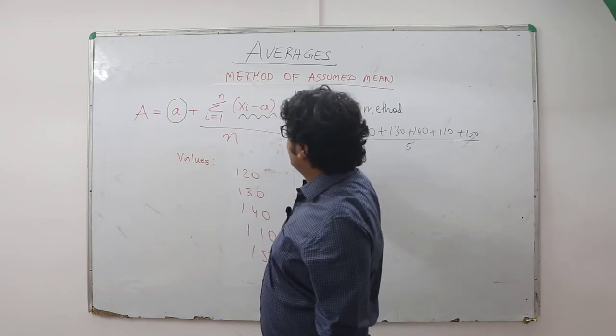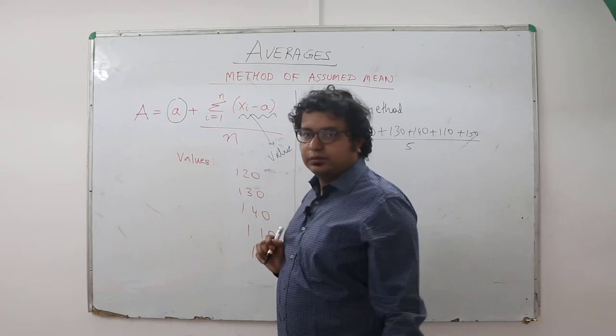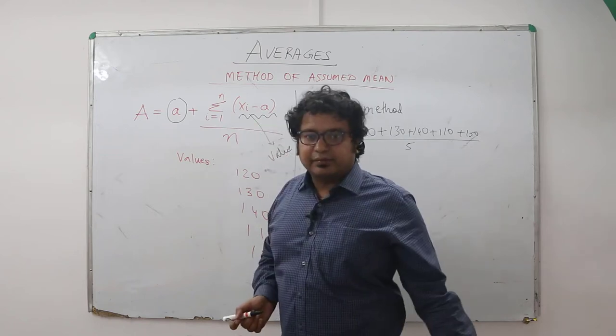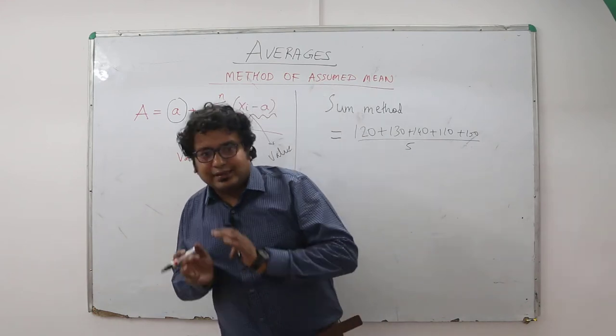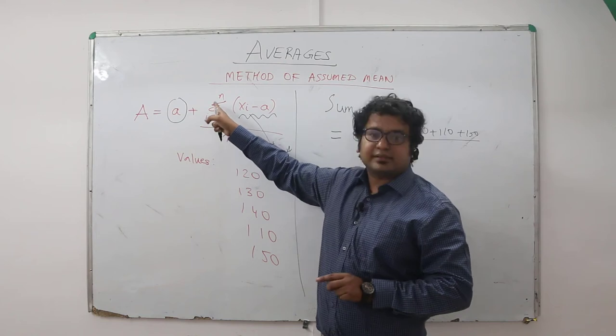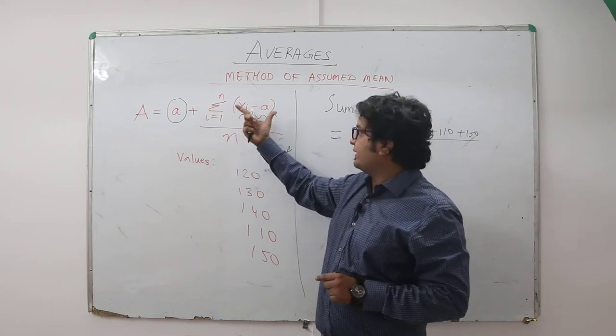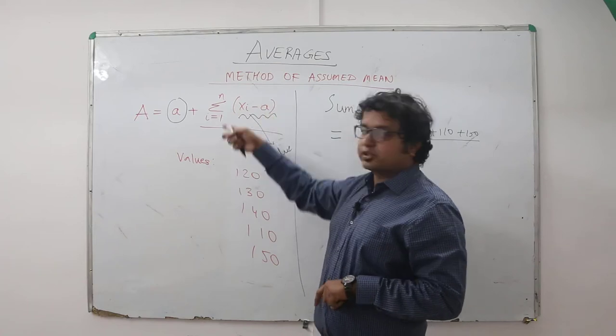What does xi denote here? Xi denotes an individual value. A is the assumed mean. So the difference between the individual value and the assumed mean is the deviation. You are finding the sum of deviation - this sign means summation. You are finding the sum of deviation and dividing it by number of values. So what is this? Average of deviation.